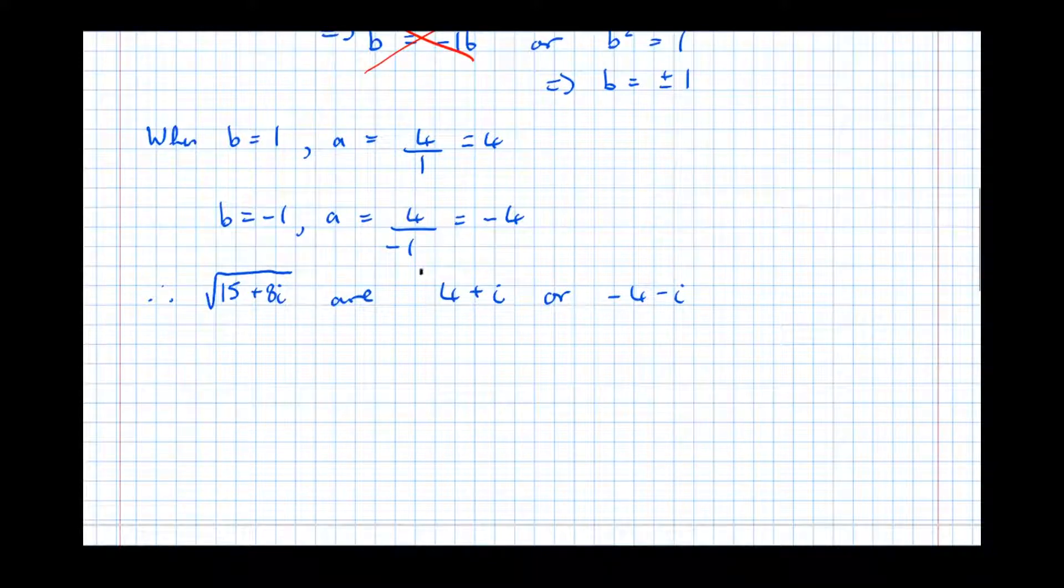So there's our answer. And any good exam answer will draw the marker's attention to what the answer actually is. So there it is. That's how to find the square roots of a complex number. And almost every time, you'll end up with stealth quadratics.